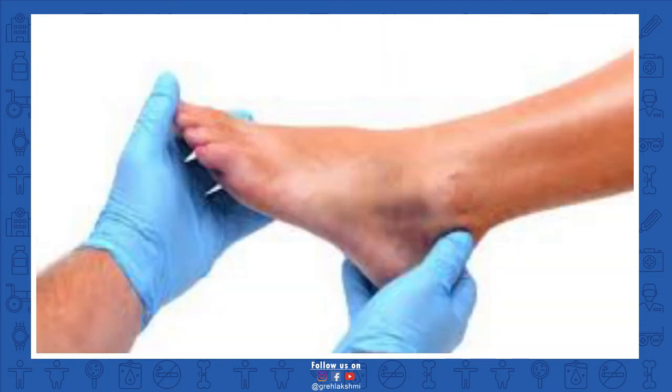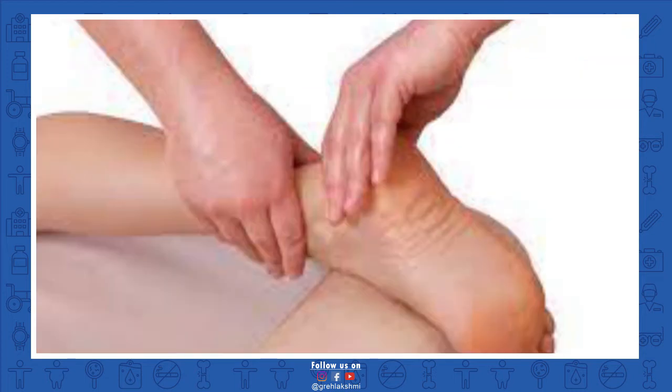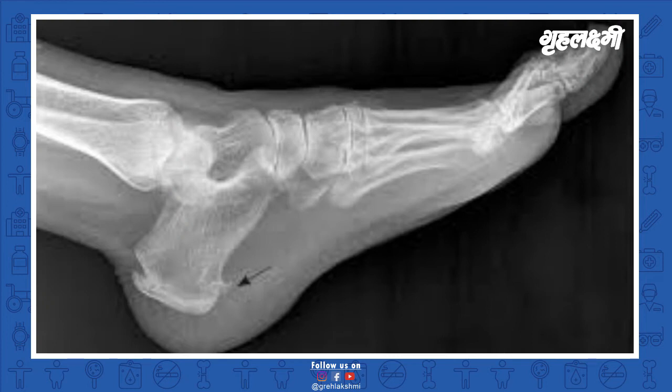If we talk about the diagnosis of this condition, it can be made from a thorough history and examination. When patients come to me, I try to confirm it with an ultrasound in my clinic. Ultrasound can show the plantar fascia band and identify if there are any tears or degeneration. We sometimes also ask for an ankle or foot X-ray to check for heel spurs, arthritis, or any joint problems.